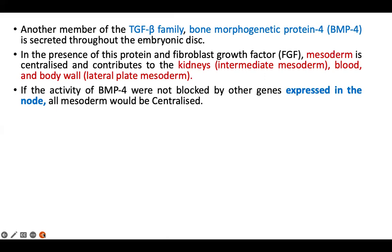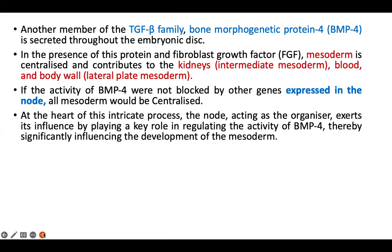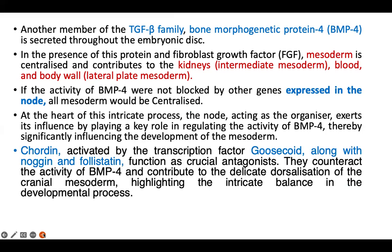BMP4 is secreted throughout the whole mesoderm, which is why mesoderm gives rise to kidneys, body wall, blood, and so on. If it is not controlled by other genes expressed from the node, then the entire mesoderm becomes ventralized. So the node, acting as an organizer, plays a key role in regulating BMP4 activity, thereby significantly influencing the development of mesoderm.